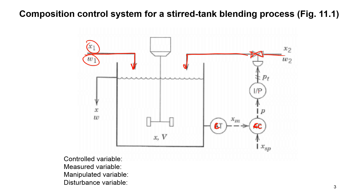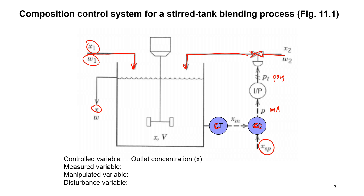We have an I-to-P converter. This is going to be coming from our controller — that might be a milliamp signal coming from our controller, and that might be a PSIG in the case of a pneumatically controlled valve. We have our set point. For our controlled variable, in this case, we're going to have the outlet concentration of our tank — that's X coming out of the tank. Our measured variable is also the same, assuming a well-mixed reactor where outlet concentration equals the concentration inside.